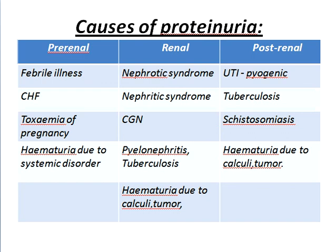Causes of proteinuria — pre-renal, renal, and post-renal. Pre-renal causes: febrile illness, chronic heart failure, toxemia of pregnancy, haematuria due to systemic disorder. Renal causes: nephrotic syndrome, nephritic syndrome, chronic glomerulonephritis, pyelonephritis, tuberculosis, haematuria due to calculi and tumour. Post-renal causes: pyogenic causes, tuberculosis, cysts, haematuria due to calculi and tumour.